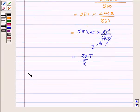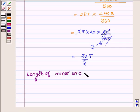And therefore we can say that length of minor arc of the chord is equal to 20 upon 3 π. So this completes the solution. Hope you enjoyed the session, take care and bye for now.